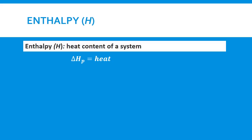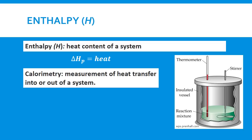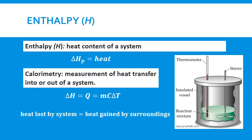Enthalpy, given the symbol H, refers to the heat content of the system. It is the energy that flows as heat during a reaction at constant pressure. The change in enthalpy is also called the heat of reaction, and reactions are carried out at 101.3 kilopascals or 1 atmosphere, and at 25 degrees Celsius which is 298 Kelvin. We use calorimetry to measure heat transfer into or out of a system. The heat lost by the system equals the heat gained by the surroundings, and delta H equals the heat gained or lost, so we can use that relationship to calculate enthalpy.